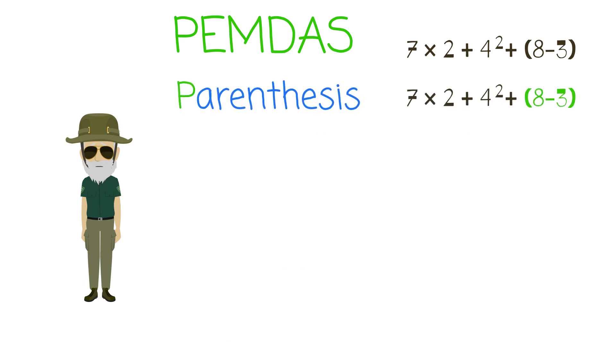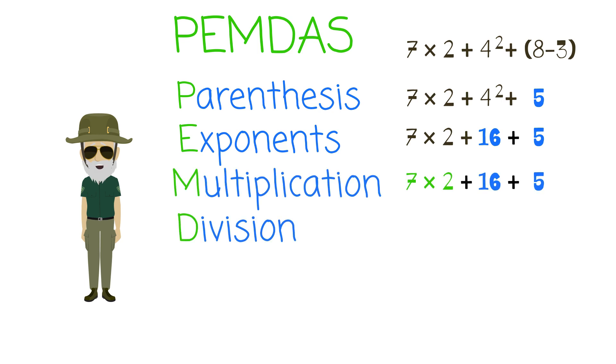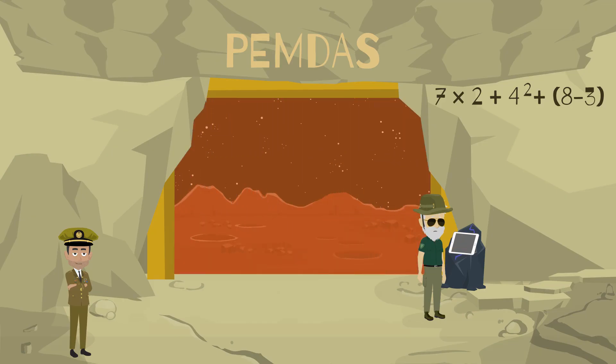So working from left to right, if we have anything in parentheses, we'll solve that first. Next we'll solve the exponents. For the multiplication and division portion, just solve them as they appear first. And finally addition and subtraction, again just solve them as they appear first working from left to right.